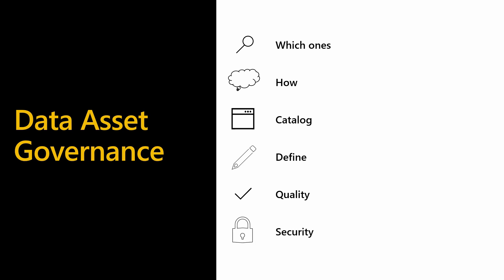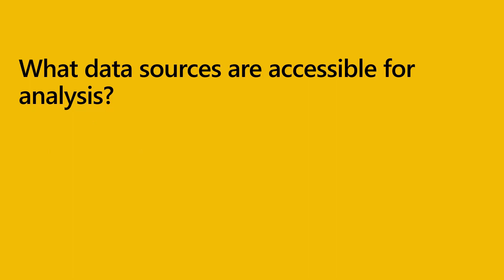How can you ensure the quality and stability of the data sources you're making available? And most importantly, how can you ensure that once an individual has access to a data source, they are only seeing the data relevant to them and only sharing it with relevant individuals, following the principle of least privileges? At this point you should discuss the key data sources that will be accessible for analysis, to understand what those key data sources are and how they will be accessed.